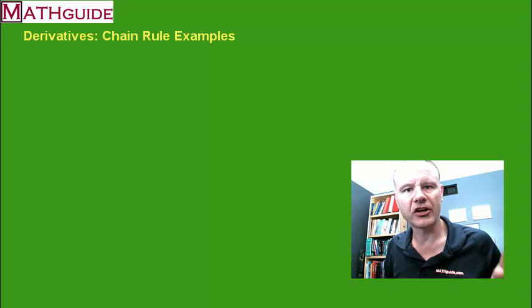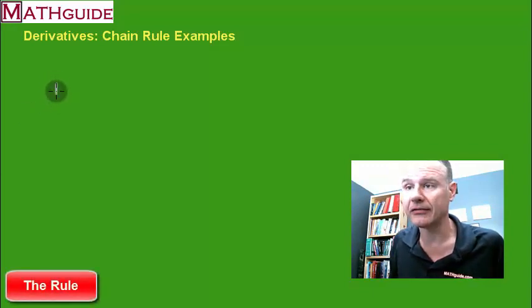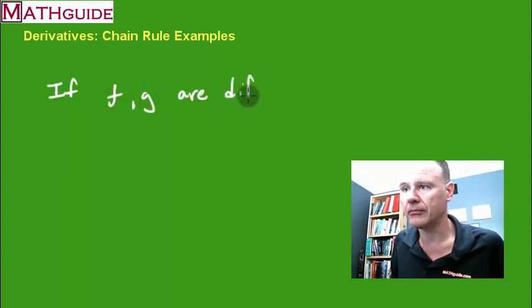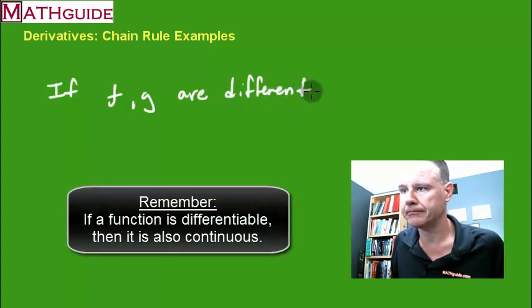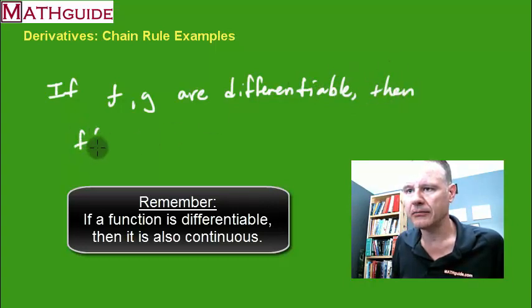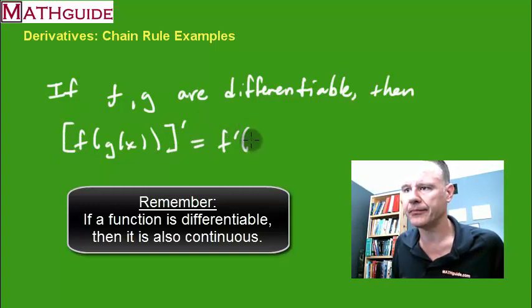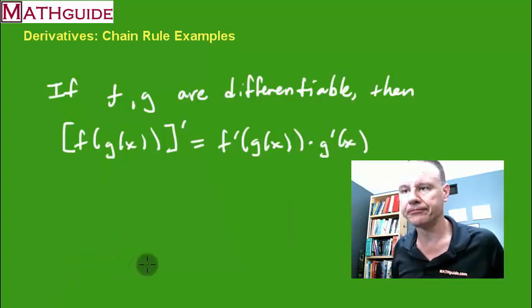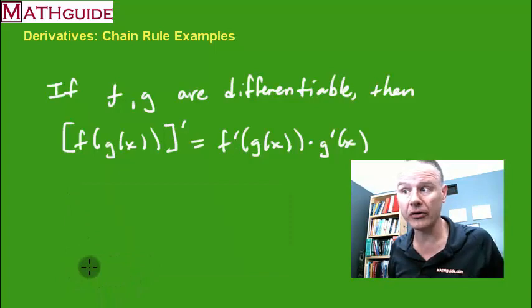The chain rule says if f and g are differentiable, then if we want to find the derivative of the composition of the two functions, it's equal to the derivative of f of g of x times the derivative of g of x. That's the chain rule. Now we need to figure out how to use this, and I'm going to show four examples.